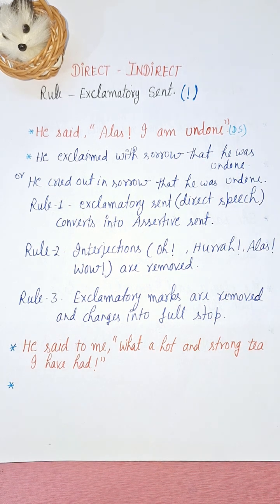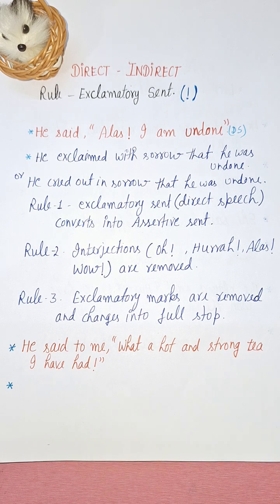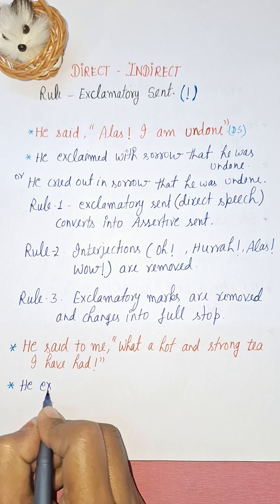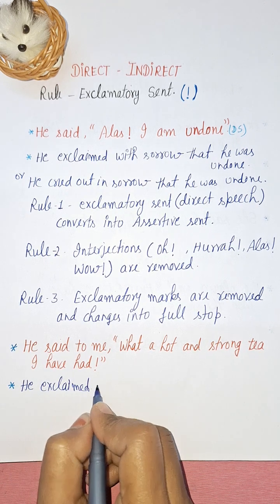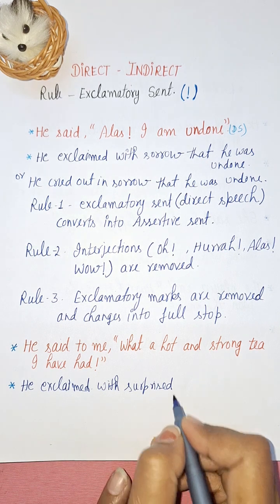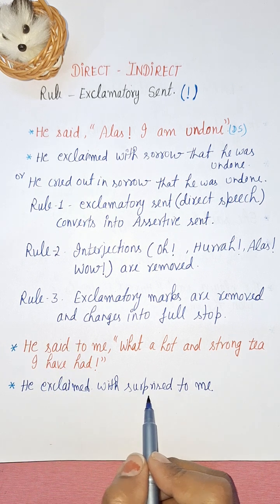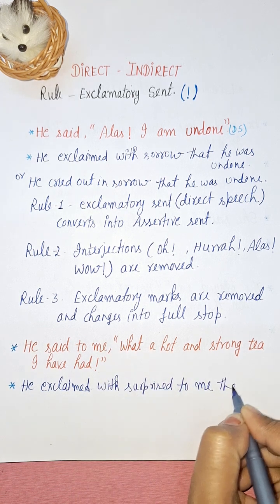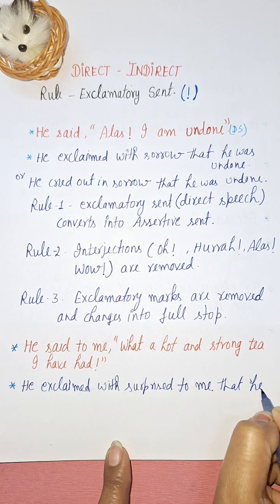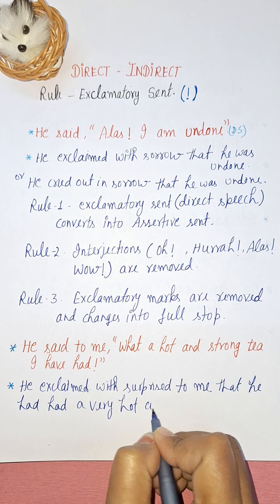Now another example: 'He said to me, What a hot and strong tea I have had!' We use 'exclaimed' again — 'He exclaimed with surprise to me.' Then we add 'that.' 'What' is replaced by 'very,' so 'what a hot and strong tea' becomes 'a very hot and strong tea.' The first person pronoun 'I' changes to 'he' according to the subject of the reporting verb.